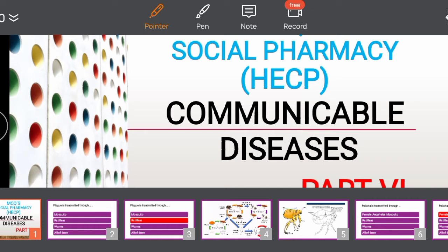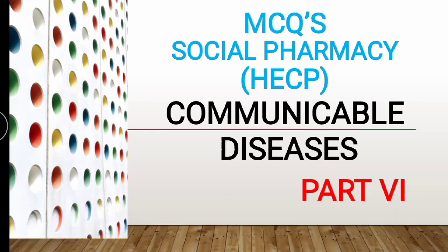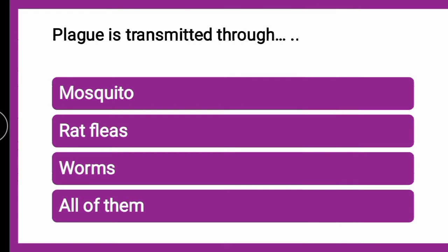To start with part 6, the first question is: plague is transmitted through — whether plague, which is an arthropod-borne disease, is transmitted through mosquito, rat fleas, worms, or all of them. The correct answer is rat fleas.